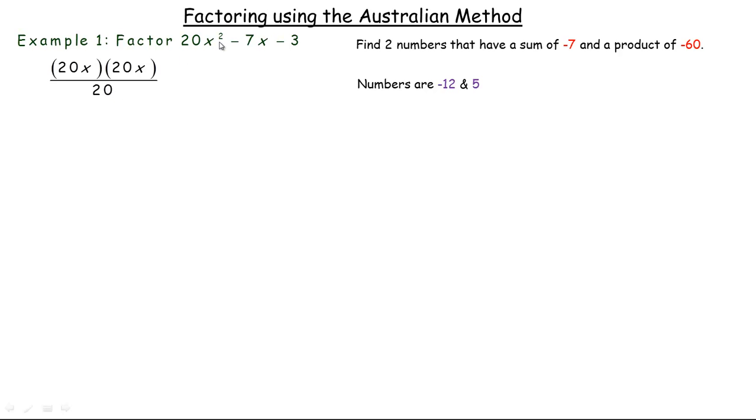The next thing you do, and what you need these numbers for, is you rewrite this with the negative 12 after one of the 20x's and the plus 5 after the other. And it doesn't matter which order you write them. Now notice I'm not putting an equal sign between here and here, because these two things are not equal. This is just how you factor using the Australian method.